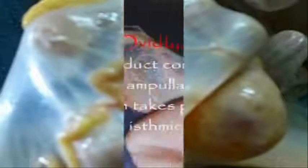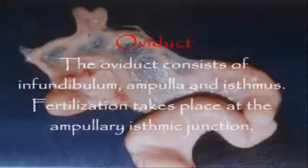The oviduct is a highly tortuous, convoluted tube supported by the mesosalpinx and feels wiry on palpation. It consists of three parts: the funnel-shaped infundibulum, which picks up the ovum; the distal dilated ampulla; and the narrow isthmus.